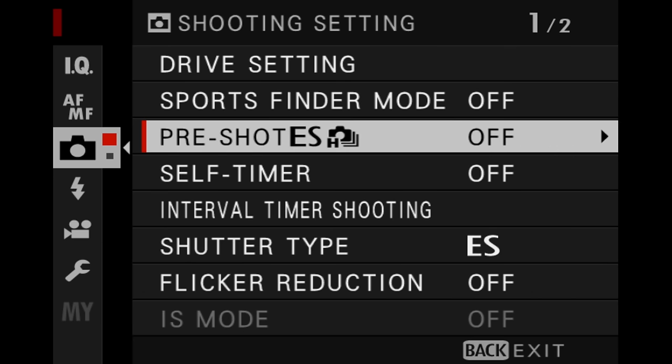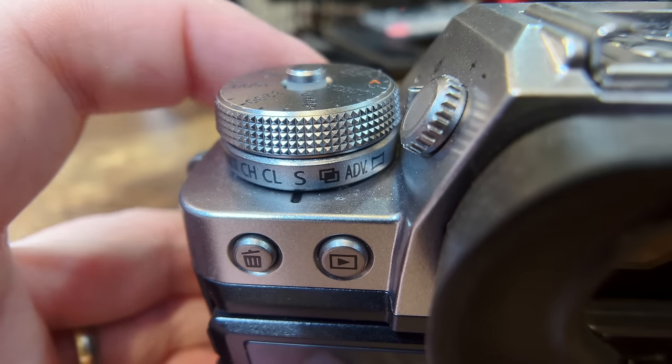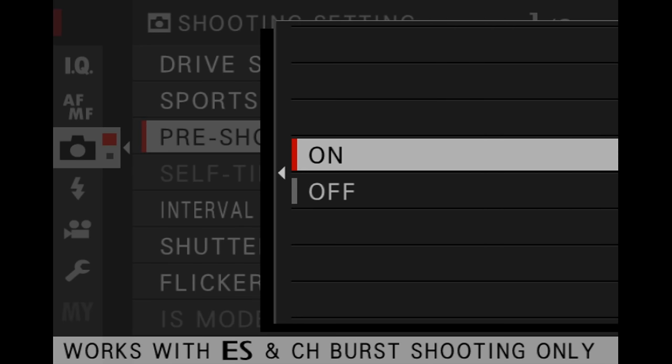And if you go back to pre-shot ES, still can't enable it. And that's because there's one more setting you need to make. You need to set your mode dial to continuous high. Once you've done that, you can go right in and select on.